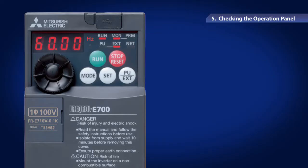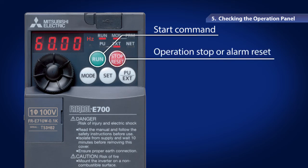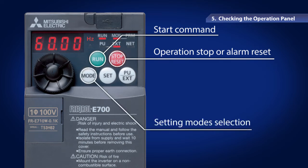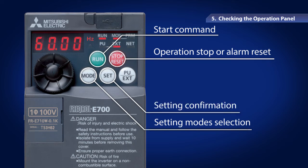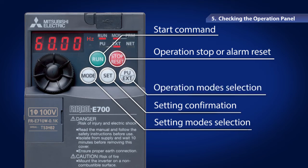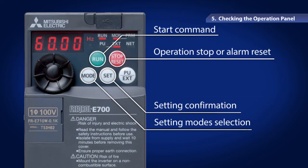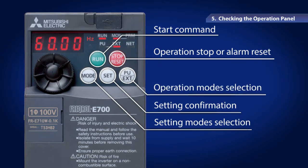Use the Run button for the Start Command input, the Stop Reset button for operation stop or alarm reset, and the Mode button for selection between the setting modes. The Set button can be used for confirming and saving each setting, and the PU EXT button for switching the operation modes.